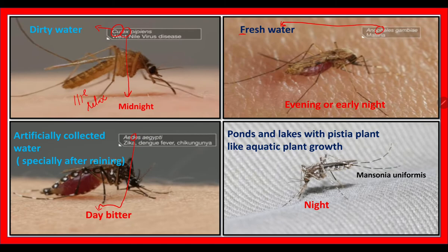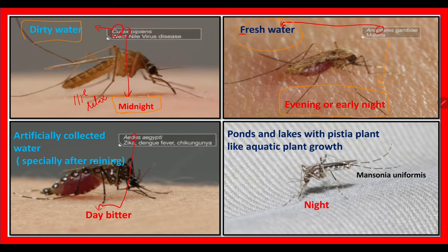We will see the breeding site and time of bite, then go to identification. First, Culex — in Tamil it is 'Kutta,' meaning dirty water. 'Lex' is like relax; when we relax we sleep, especially at midnight. So what bites at midnight is Culex, and it breeds in dirty water. Anopheles: 'PH' gives the sound of F, meaning fresh water breeding. The evening or early night bite is by the Anopheles mosquito. Aedes has 'D,' so Aedes is a day biter, and it breeds in artificially collected water — especially after rain, in coconut shells, tires, and plastics.